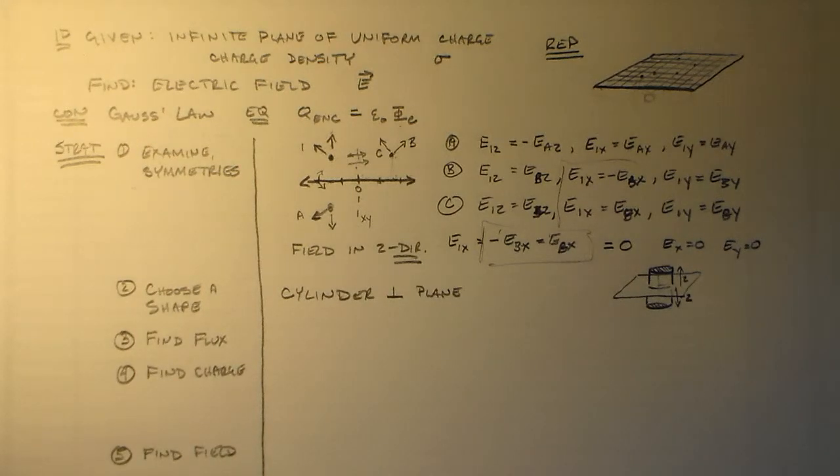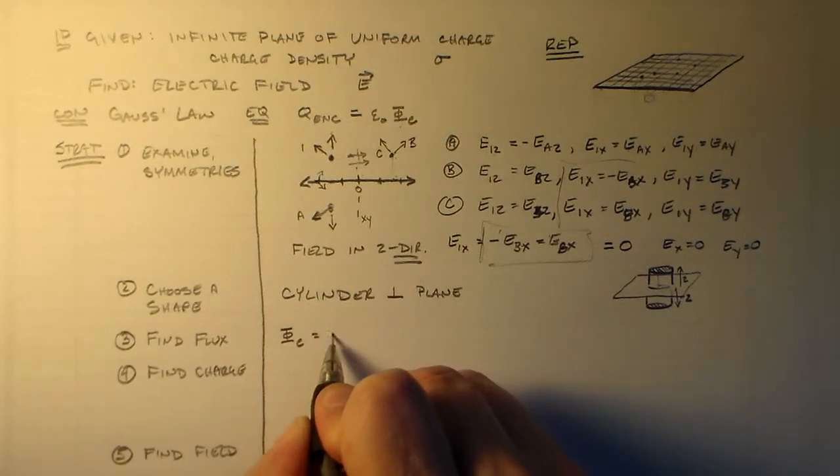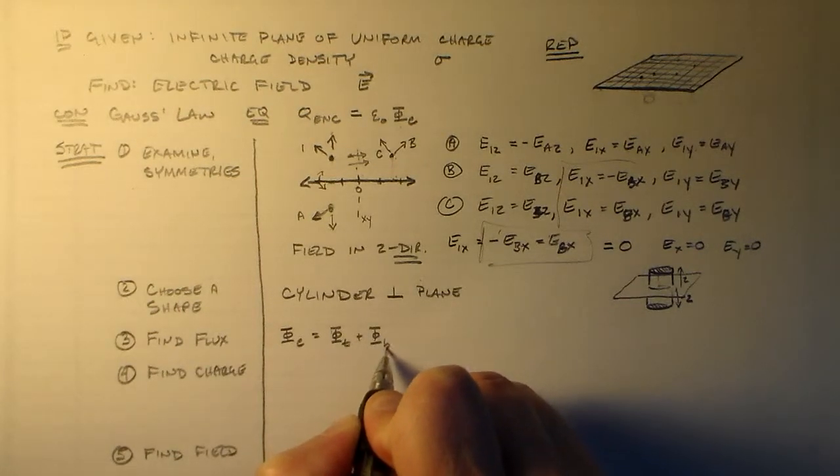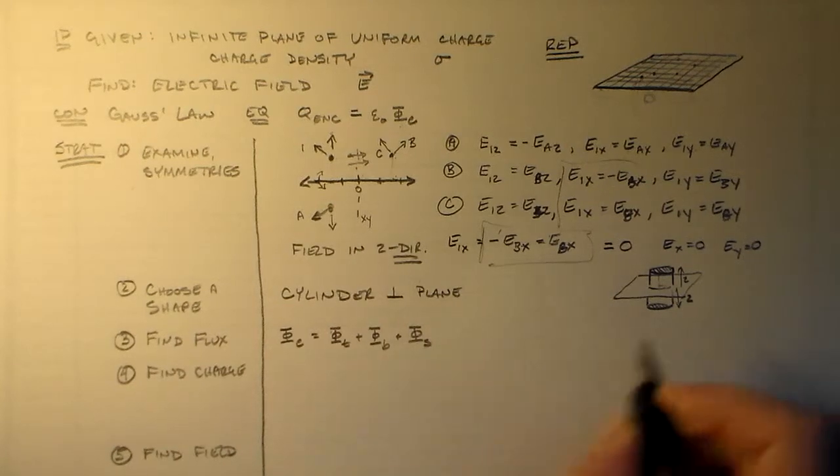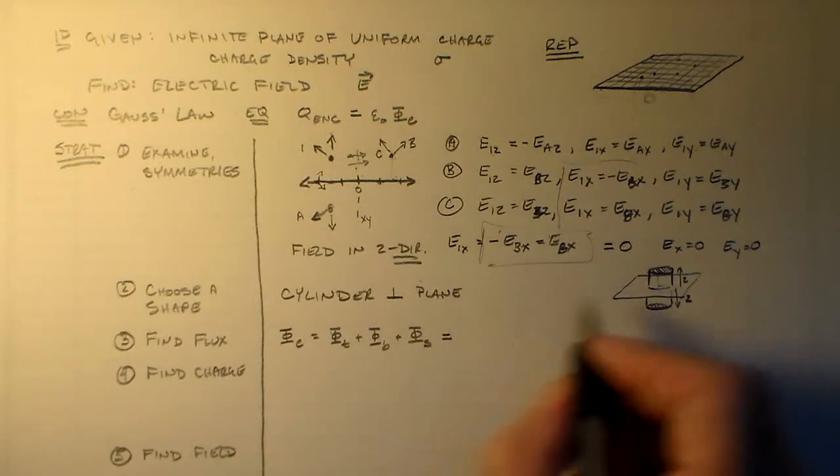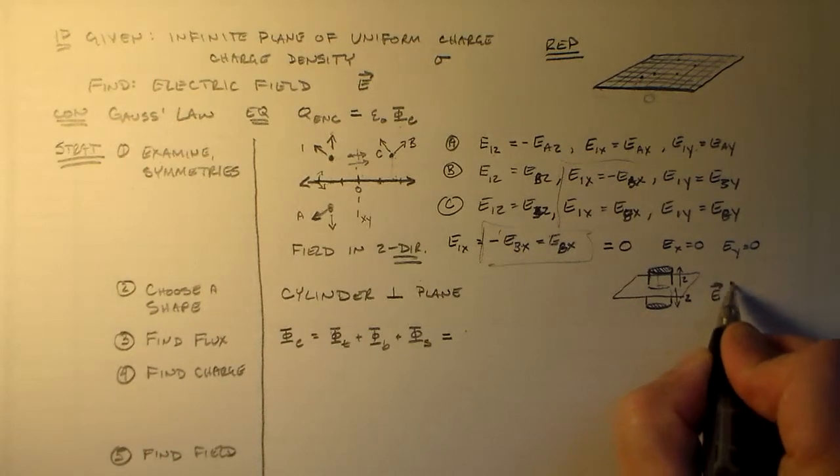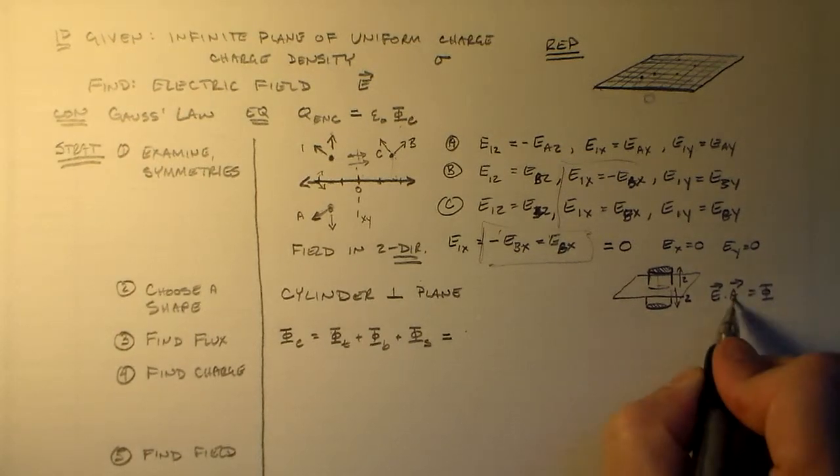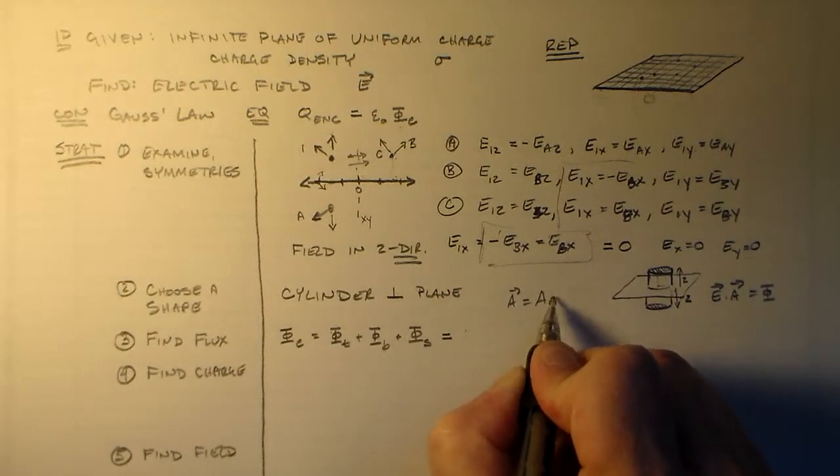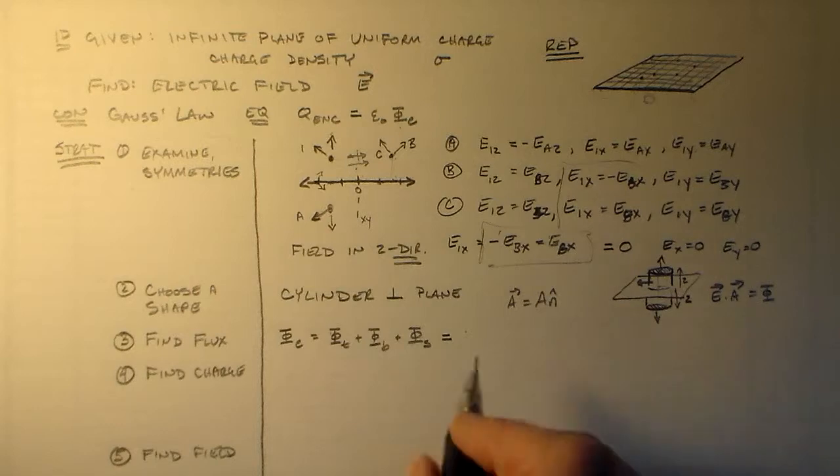Now the flux, phi E, is going to be equal to phi from the top plus phi from the bottom plus phi from the sides. Now, what we've just said is that these are E dot A. The flux is E dot A. A is the area times the unit normal for this. And the unit normal is outward: out, out, out.